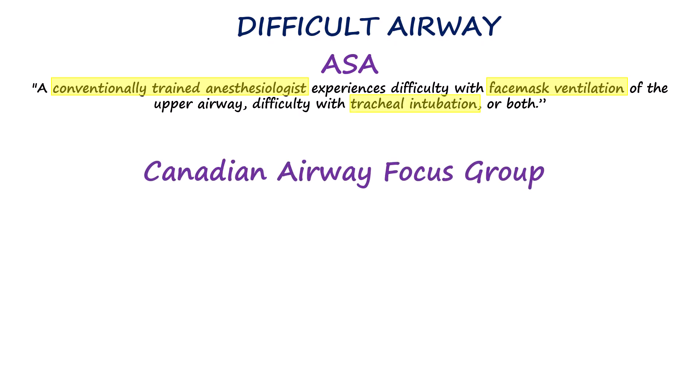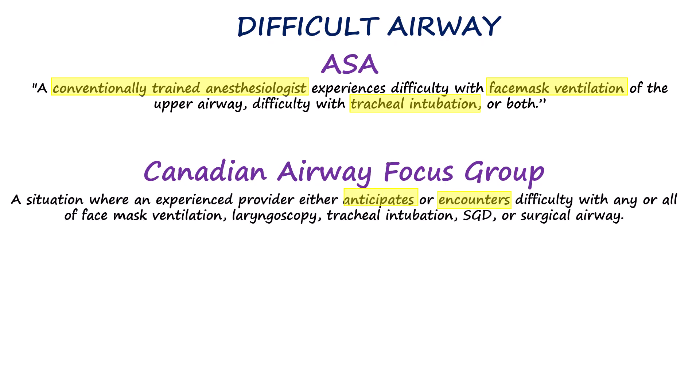The Canadian guidelines take a broader view. They define a difficult airway as a situation where an experienced provider either anticipates or encounters difficulty with any or all of face mask ventilation, laryngoscopy, tracheal intubation, supraglottic airway use, or surgical airway. A difficult airway in this context can be recognized beforehand — referred to as an anticipated difficult airway — or it may only become apparent during the procedure, referred to as an encountered or unanticipated difficult airway.